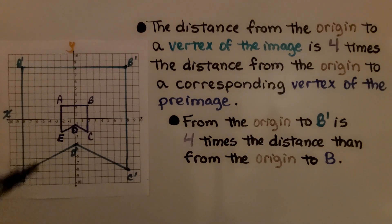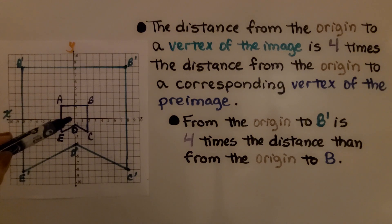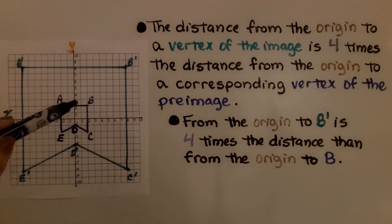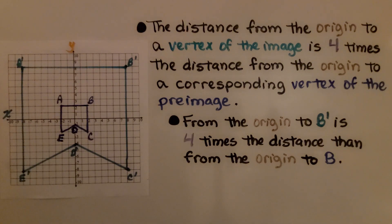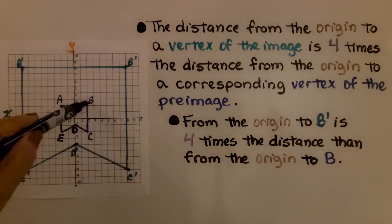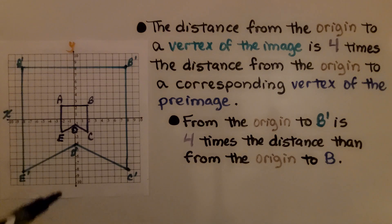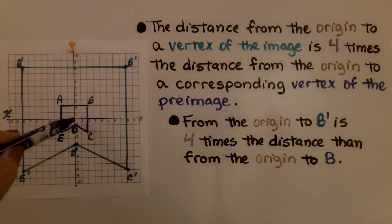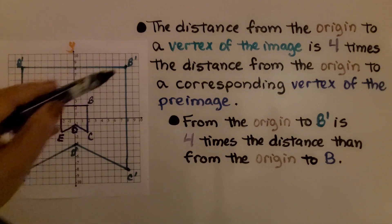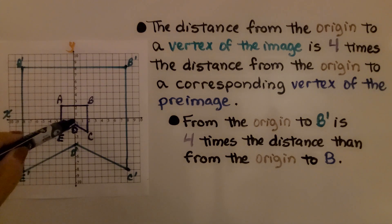The distance from the origin to a vertex of the image is 4 times the distance from the origin to the corresponding vertex of the preimage. So from the origin to B prime is 4 times the distance from the origin to B.